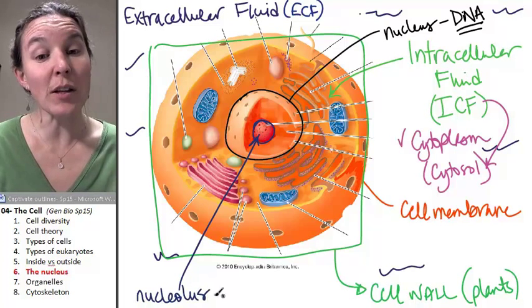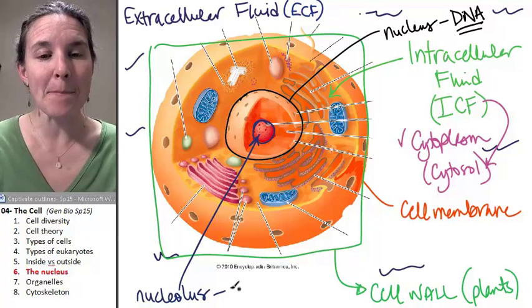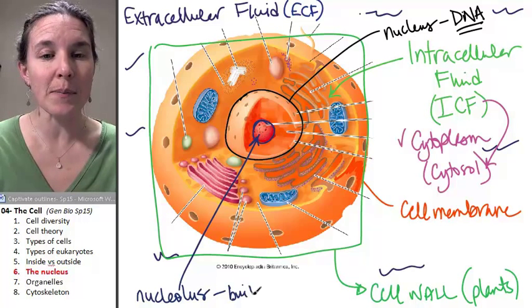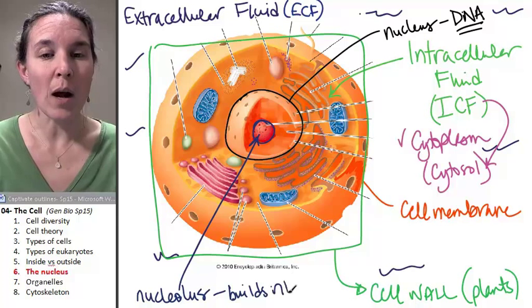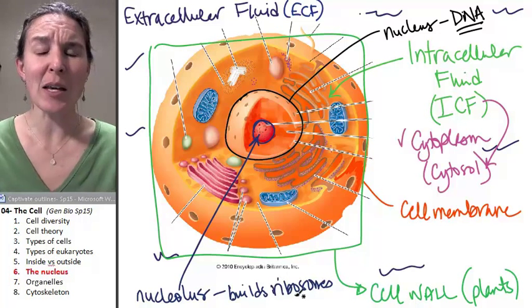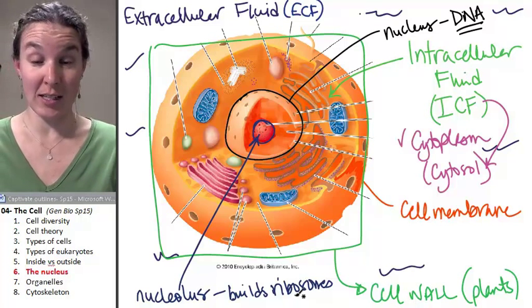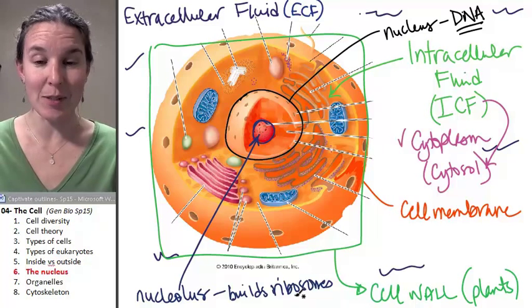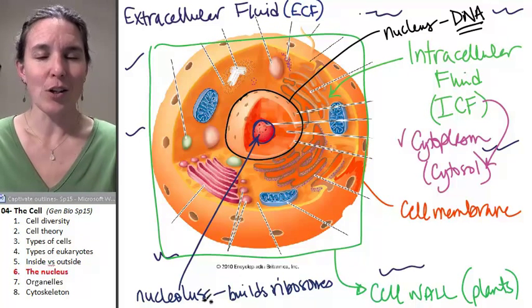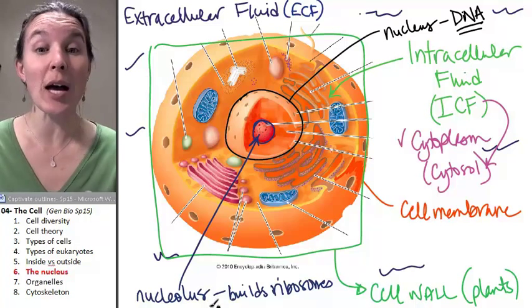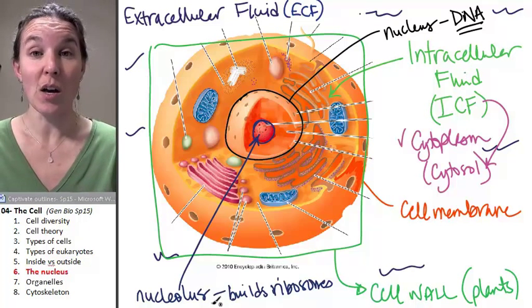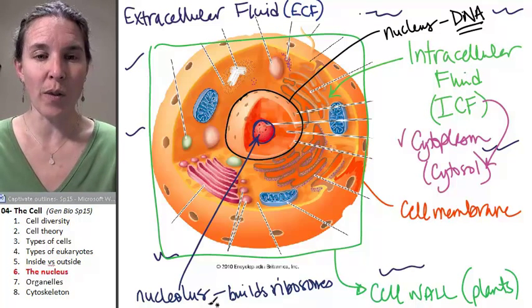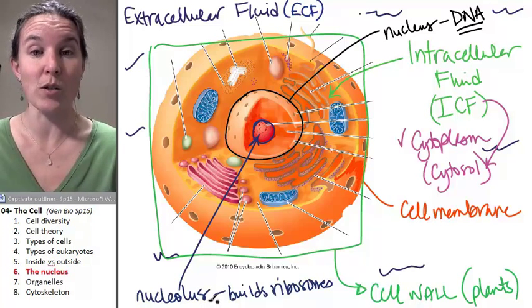And the nucleolus has an important job. It builds ribosomes, ribosomes. And this matters because we're going to spend a day talking about ribosome function. Like, what does a ribosome do? And why do we, like, you've got a whole structure inside every single cell just to build ribosomes. So it's actually kind of an important thing. The nucleolus is an important structure.